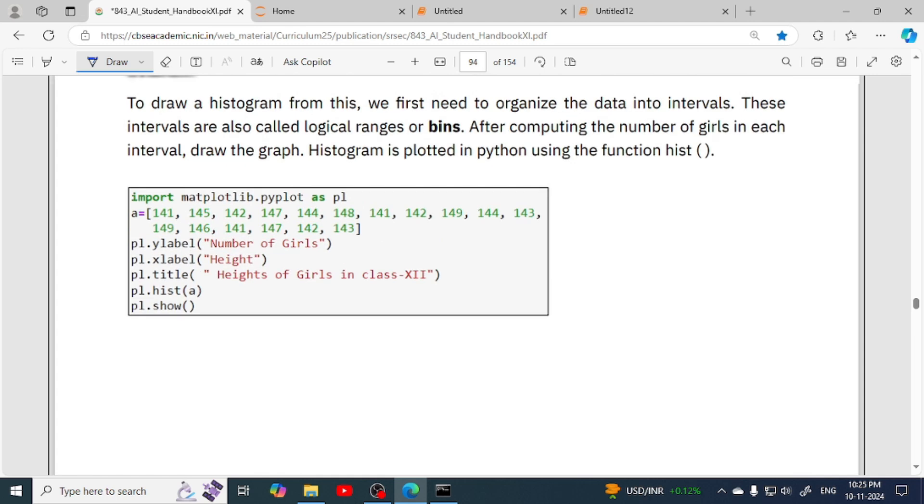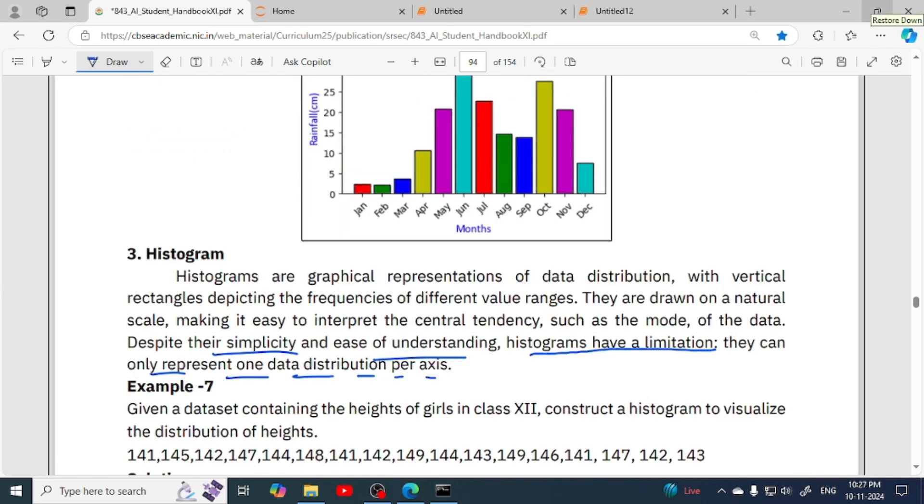But it is the limitation of histogram that we cannot represent more than one data distribution. Even in bar chart we can show more than one category or more than one data. For example, if I want to show marks of roll number one in different subjects, and also roll number two, then I want to show math marks, English marks, and science marks for both roll number one and roll number two.